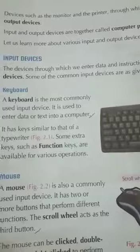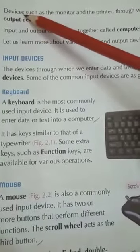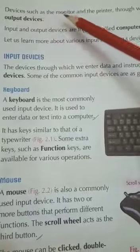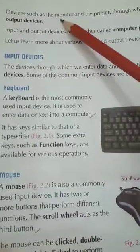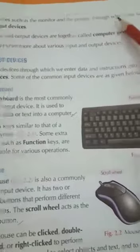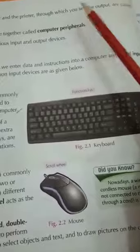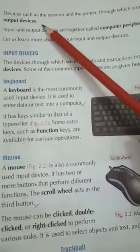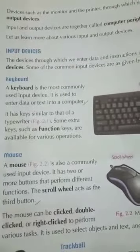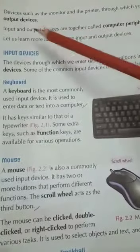आज का हमारा lecture number 3 है. Let's start our lesson. Devices such as the monitor and the printer — जैसा के monitor और printer — through which you see the output, जिसमें से आप output हासिल करते हैं, are called output devices. जिससे हम फाइदा हासिल करते हैं, मतलब जो हमें काम complete करके देती हैं, वो output होता है, वो output devices कहलाती है.